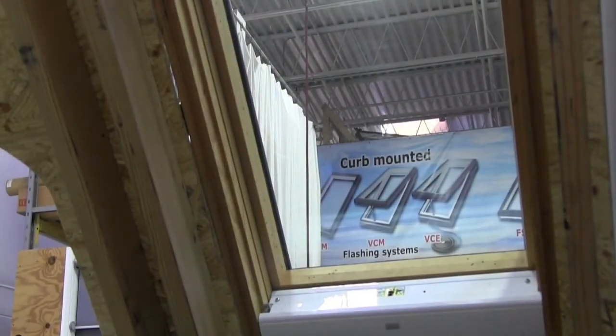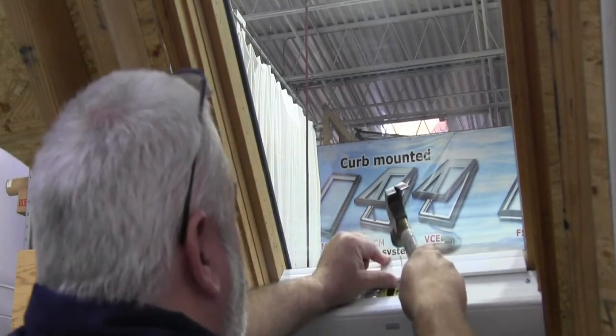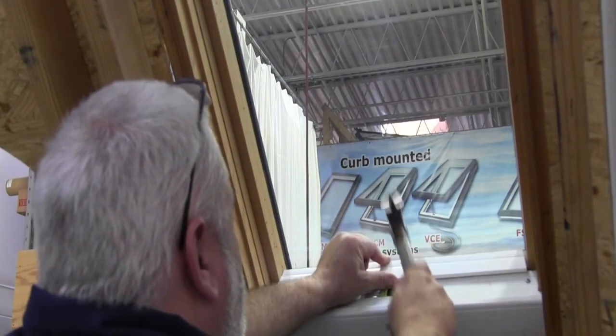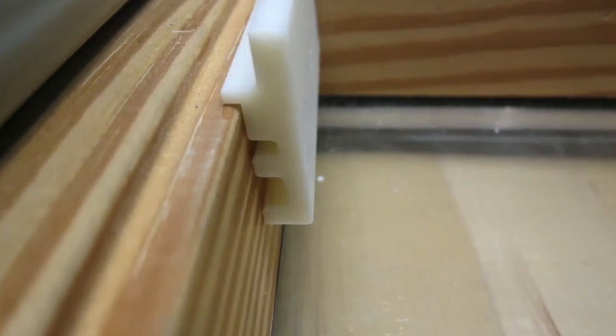We can now install the B trim piece running the width of the bottom skylight frame and once again you will want to take precaution and verify the placement of this B trim piece as indicated in this photo.